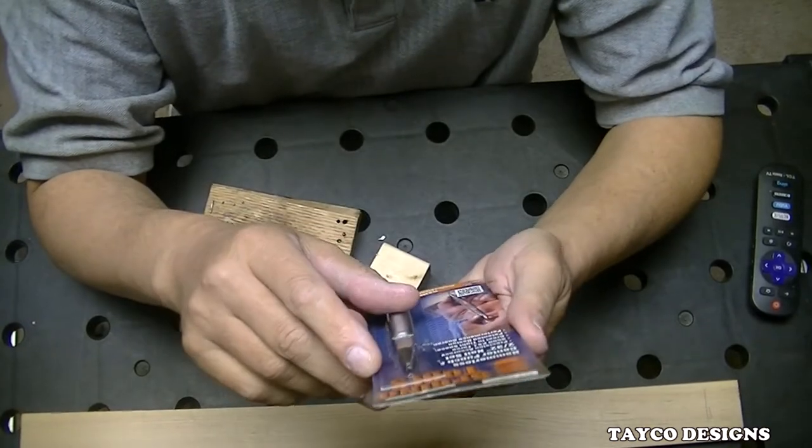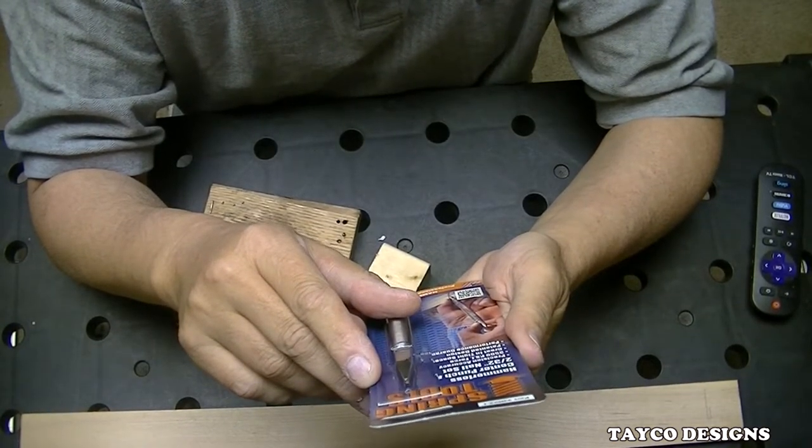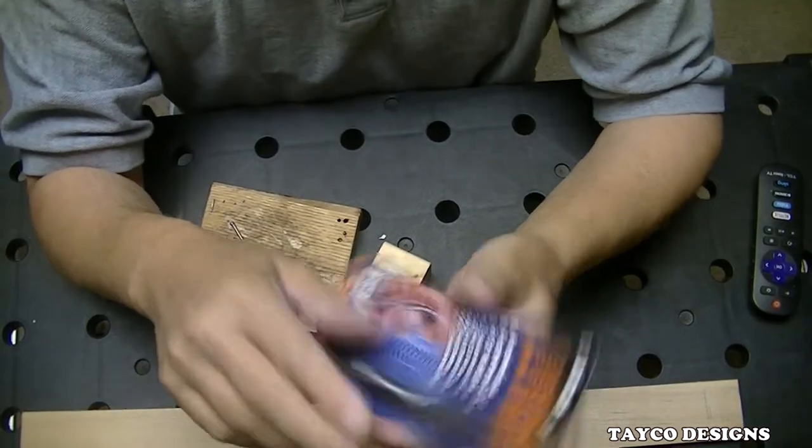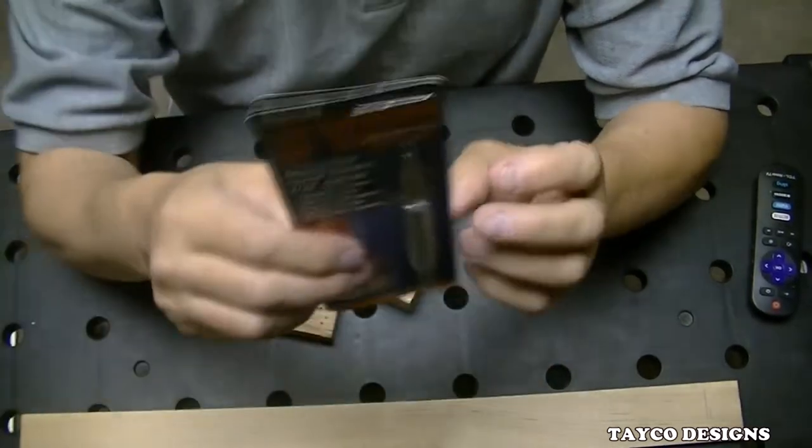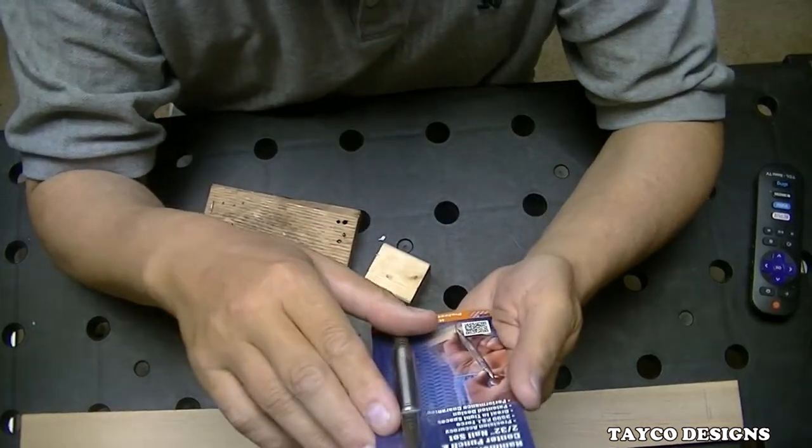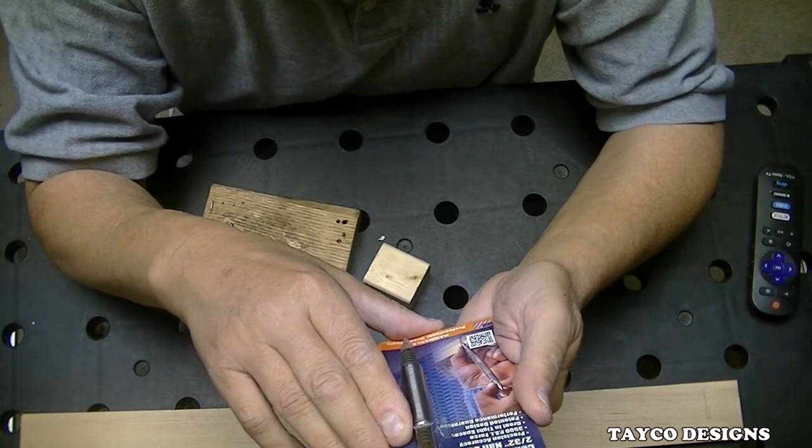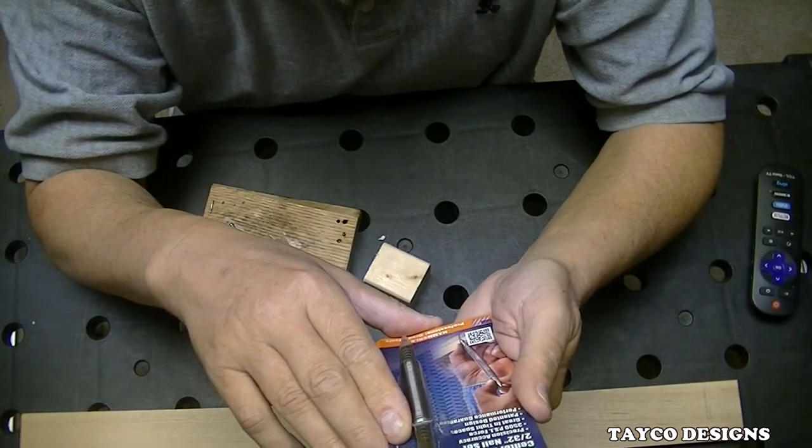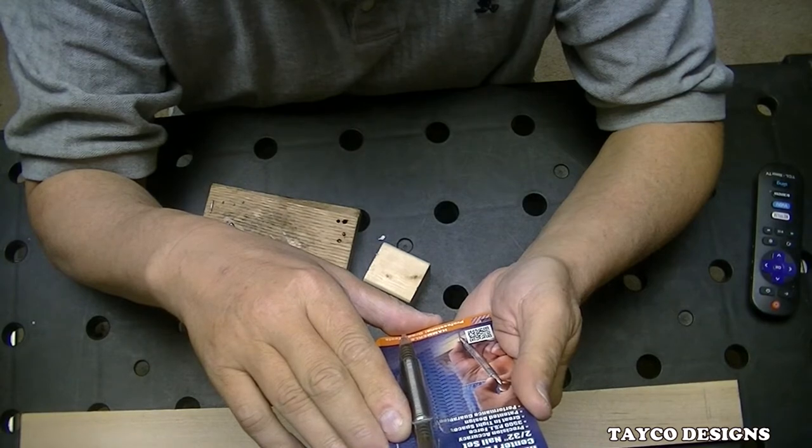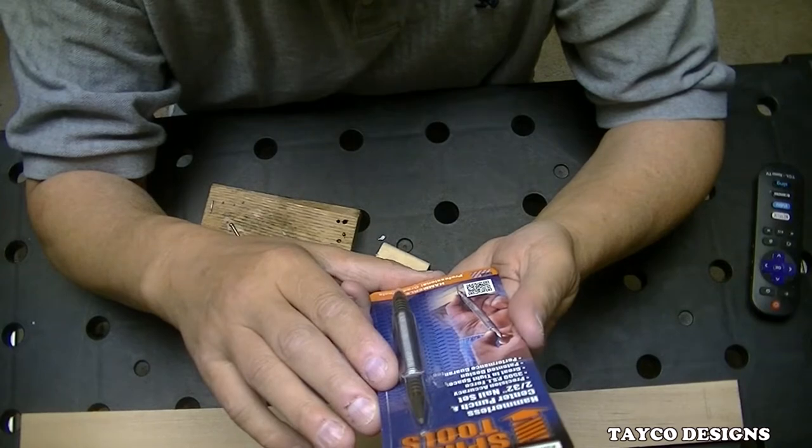Hammerless center punch and 2/30 seconds nail set. Why didn't they just call that 1/16th? Okay, precision accuracy, 3,500 psi force, great in tight spaces, patented design, performance guarantee, hammerless professional grade tools made in the USA.